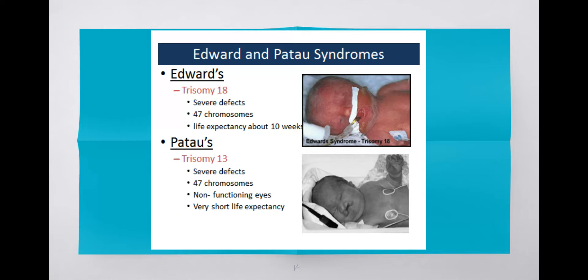Edwards and Patau syndrome are other examples of trisomy - at the 18th chromosome and the 13th chromosome respectively. Unfortunately for both of these, the life expectancy of children born with these diseases is very short, perhaps 10 weeks or even less. They're born with severe defects - for example, in Patau syndrome their eyes don't function at all. These are trisomies at chromosomes with very important coding where having extra copies doesn't work, unlike Trisomy 21 where the person can still live a normal and healthy life.